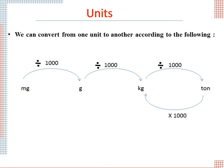From ton to kilogram, we have to multiply by 1000. From kilogram to gram, we have to multiply by 1000. From gram to milligram, we have to multiply by 1000.